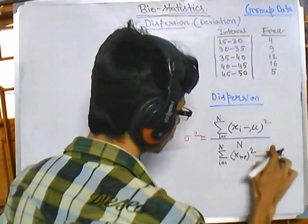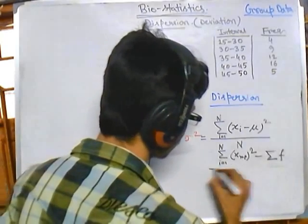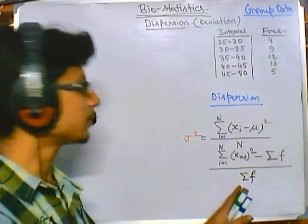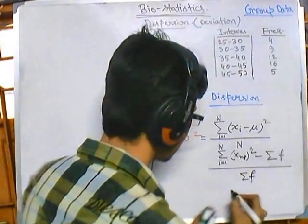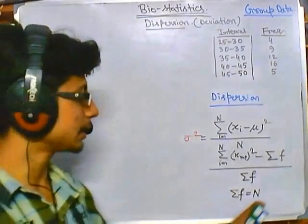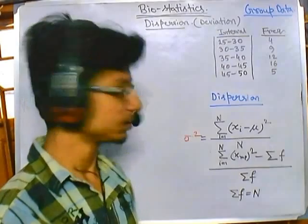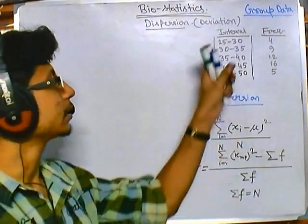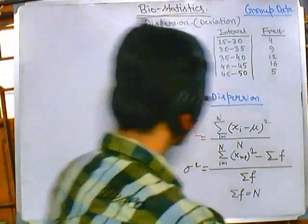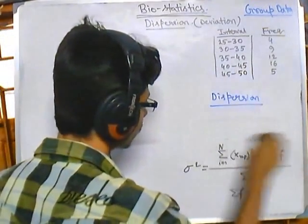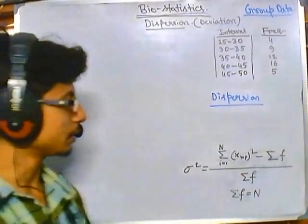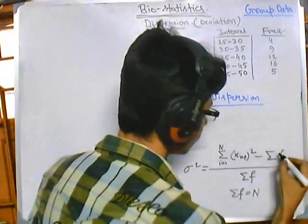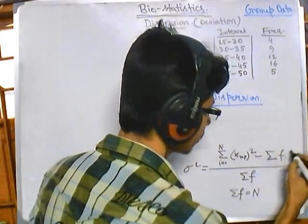The formula involves the summation of frequency, divided by the summation of frequency. The total summation of frequency is also denoted as capital N, representing the total number of observations available. This is the formula for calculating the dispersion from group data. There must be a square applied to the midpoint value in the formula.